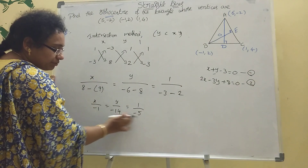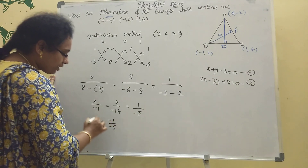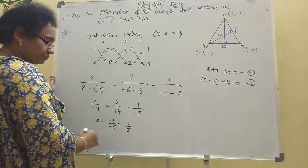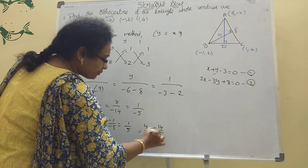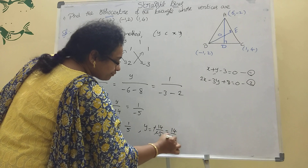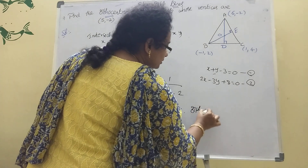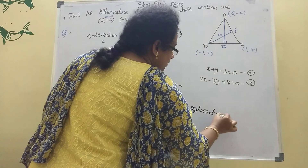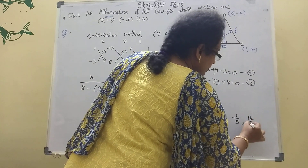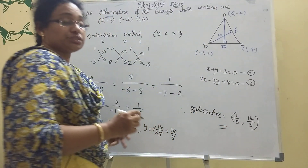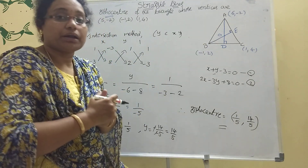Therefore x = -1 / -5 = 1/5, and y = -14 / -5 = 14/5. The orthocenter is the point (1/5, 14/5). The orthocenter means the point of concurrence of the altitudes.